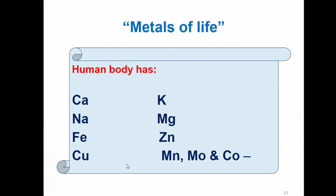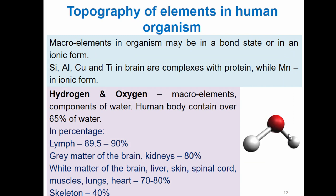Then we have these 10 metals which are called the metals of life: calcium, sodium, iron, copper, potassium, magnesium, zinc, manganese, molybden, and cobalt. Regarding the topography of elements in the human organism: macroelements in the organism may be in a bone state or in ionic form. Silicon, aluminum, copper, and titanium in the brain are complexes with protein, while manganese is in ionic form.